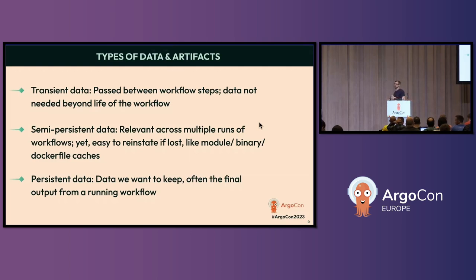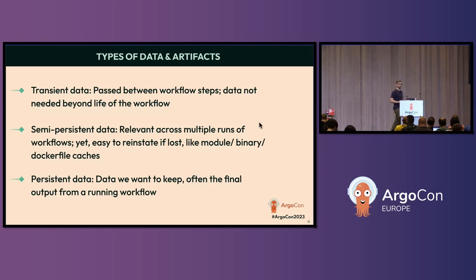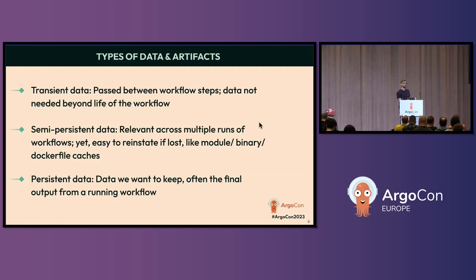We want to zoom in on how persistent the data is that you want to work with, because that really affects how you're going to manage it throughout the Argo Workflow. Transient data is data you don't really care about beyond the step it's used in — it's rarely needed beyond the life of the workflow. As we get more persistent, we start being more concerned about how to archive it and how to search and find it. Semi-persistent data, like Docker file caches, can be easily reinstated if lost. But persistent data — typically the fully processed output of a workflow — is something we definitely want to keep.